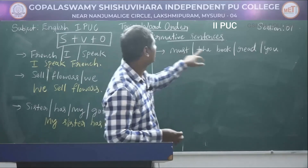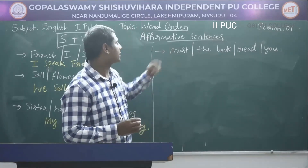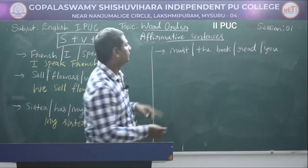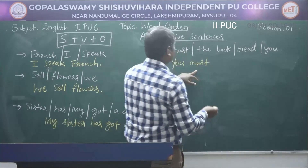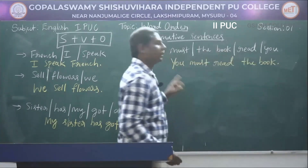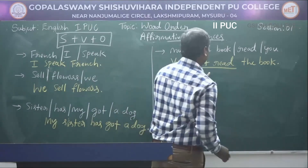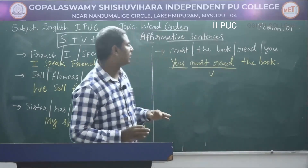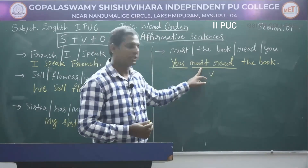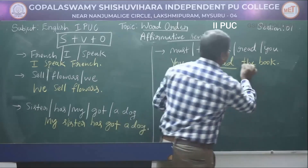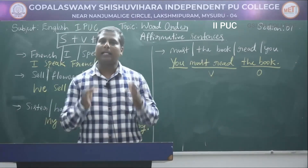In the next sentence you have the words 'must,' 'the,' 'book,' 'read,' 'you,' and a modal verb. The subject is 'you,' followed by the modal verb 'must,' then the main verb 'read' — notice the main verb 'read' is preceded by the modal verb 'must' — then the object 'the book.' So the answer is 'You must read the book.'